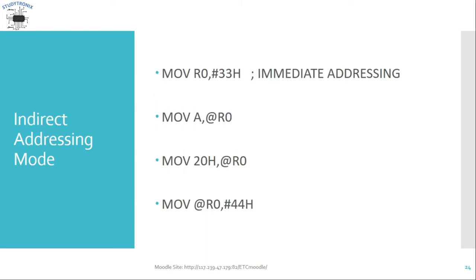Next is indirect addressing mode. Here registers are used as pointers to memory locations from which we want to access or store data. For example, MOV A, @R0 — the accumulator is the destination operand and @R0 is the source operand. The @ symbol means R0 is used as a pointer. To use R0 as a pointer, we first initialize it: MOV R0, #33H. This loads 33H into R0 so that R0 now points to memory location 33H.